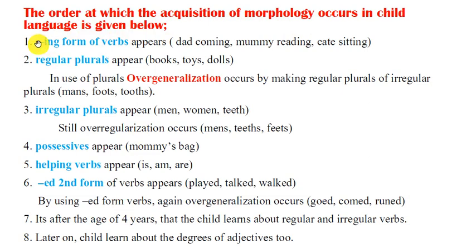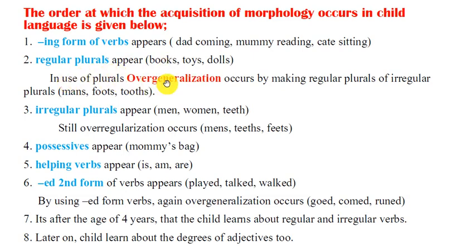The order in which acquisition of morphology occurs in child language is as follows. First, the '-ing' form of words appears — for example, 'coming,' 'reading,' 'sitting.' Then regular plurals appear — for example, 'books,' 'toys,' 'dolls.' Overgeneralization occurs here, with children making regular plurals of irregular nouns, for example 'mans,' 'foots,' 'tooths.'